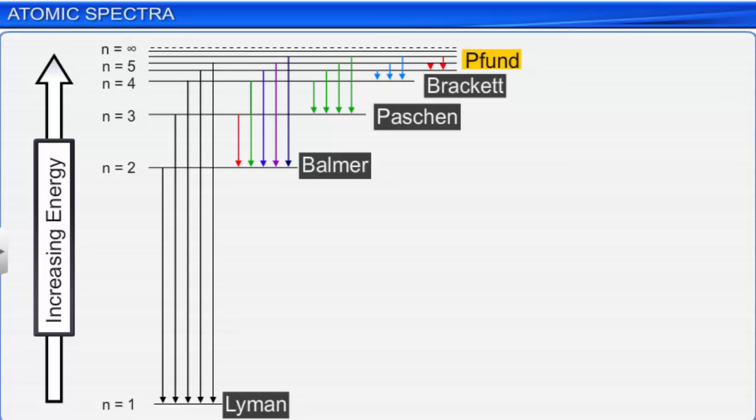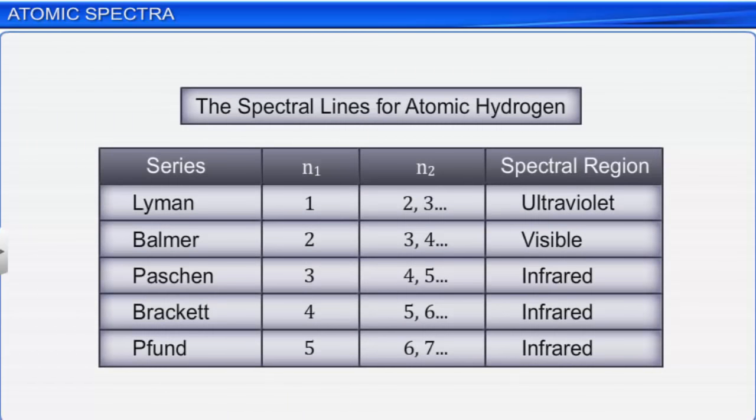Each of these series represents the line spectrum emitted by the electrons of hydrogen atom when they change state from n₂ to n₁ principal energy levels, where n₁ and n₂ represent the lower and higher energy levels respectively.